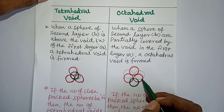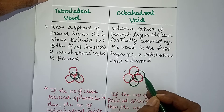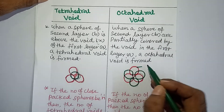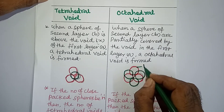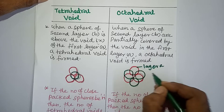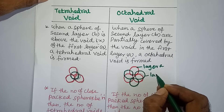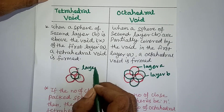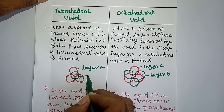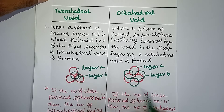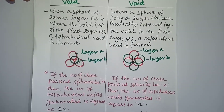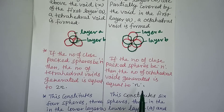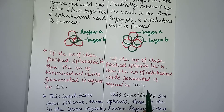Three spheres in layer A and three spheres in layer B. The number of tetrahedral voids generated is equal to 2N. The number of octahedral voids generated is equal to N.